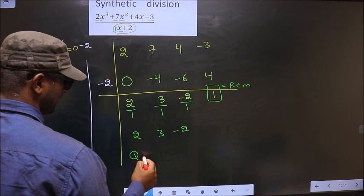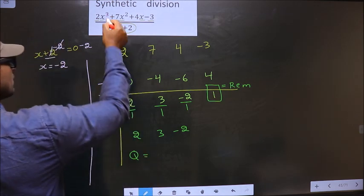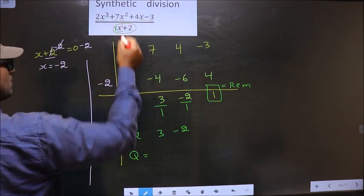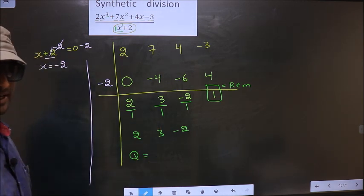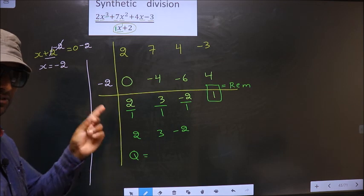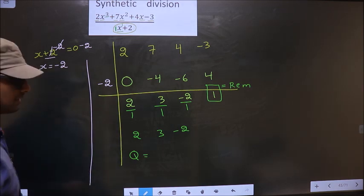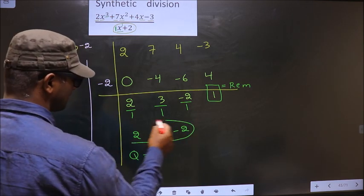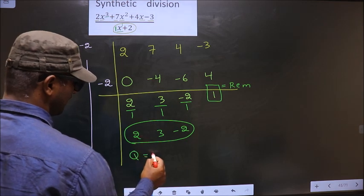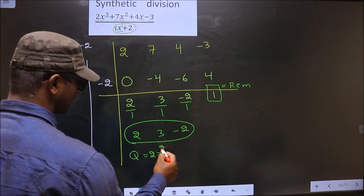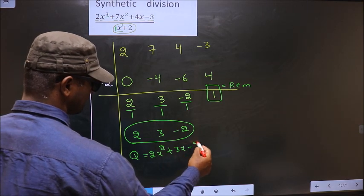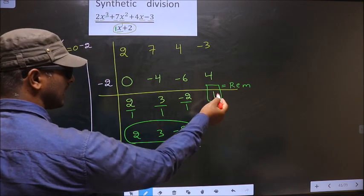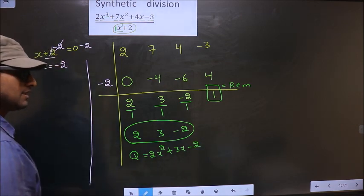So now our quotient is. Numerator is cubic. Denominator is linear. So our quotient will be quadratic. And coefficients for that quadratic are these numbers. That is 2x square plus 3x minus 2. So this is our quotient and this is our reminder.